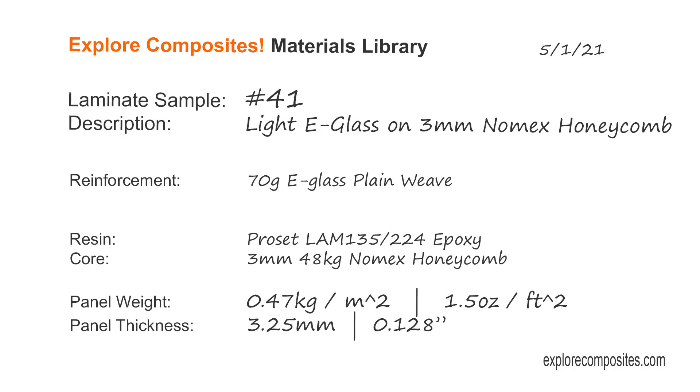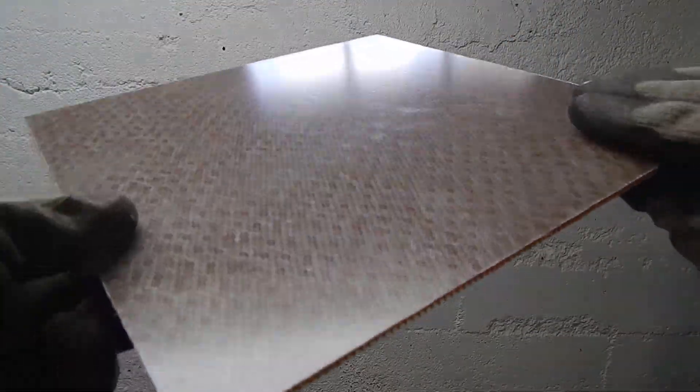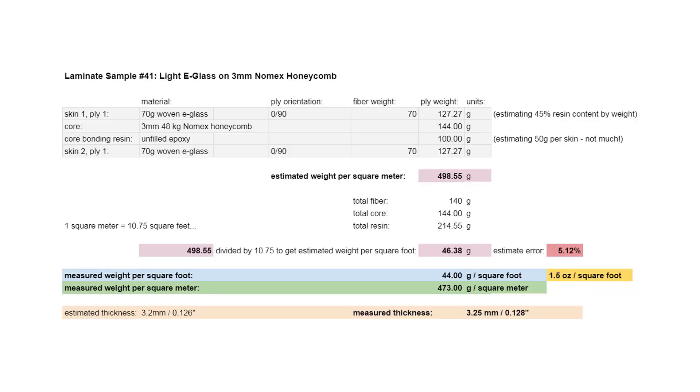Welcome to the Explore Composites materials library. This is laminate sample 41. It's a super light e-glass panel on Nomex core. The skins are only 70 gram and the core is 3 millimeter 48 kilo Nomex.